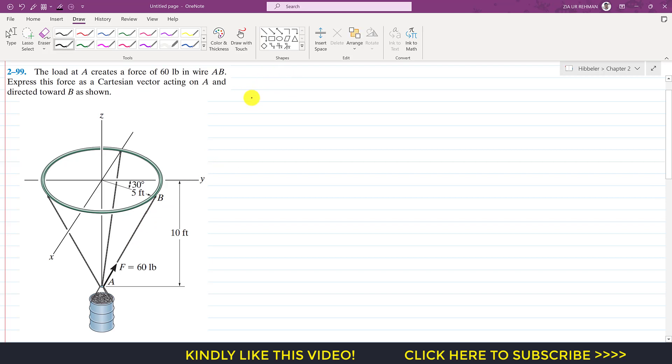As we know, the force F as a Cartesian vector equals its magnitude times the unit vector from A to B. The magnitude is 60 pounds, and the unit vector from A to B is the position vector from A to B divided by its magnitude. So first we need to find the position vector from A to B.